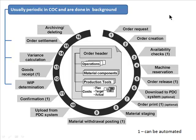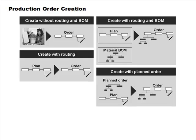For creation of production orders, there are many options. The most common is to run MRP, get a planned order, convert it to a production order, and run it. But it's also possible to manually create an order — even one with no routing or BOM — for simple activities or one-off things you need to make.